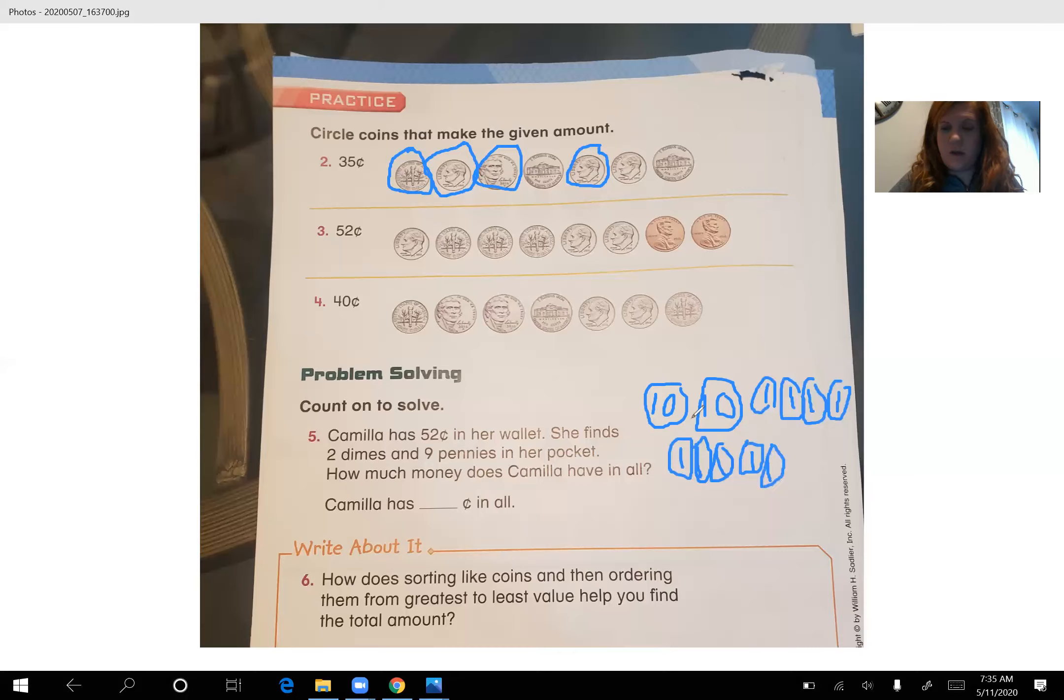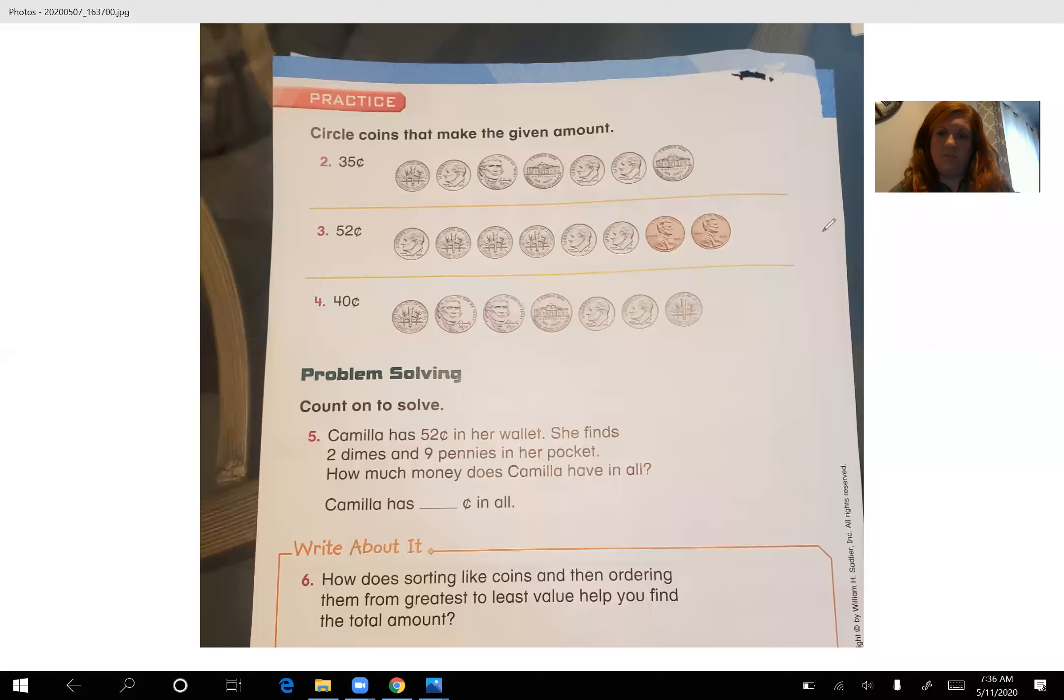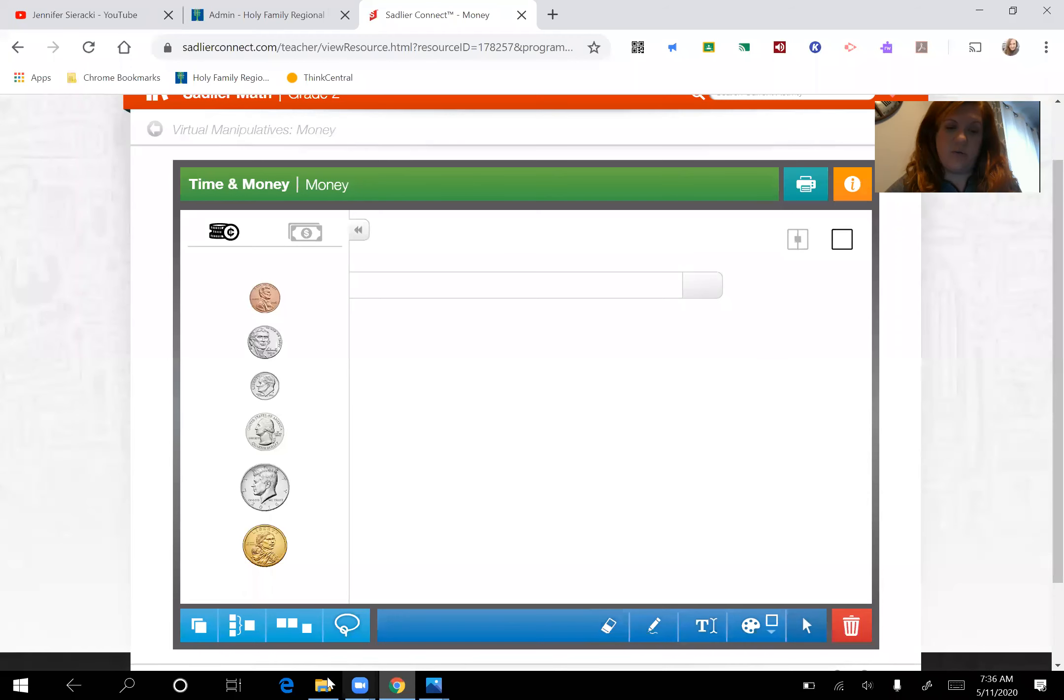Or you can draw your money out and do that. 10, 20 and then she has these pennies. Number six, how does sorting like coins and then ordering them from greatest to least value help you find the total amount? Okay, so what that's asking is why is sorting coins like this from biggest to smallest? Why is that helpful when you're finding out how much money you have? I think it would be easier to count it that way from highest number to smallest number than having a bunch of different coins all out of order and having to count it that way. So that might be helpful for you when you're answering your question.